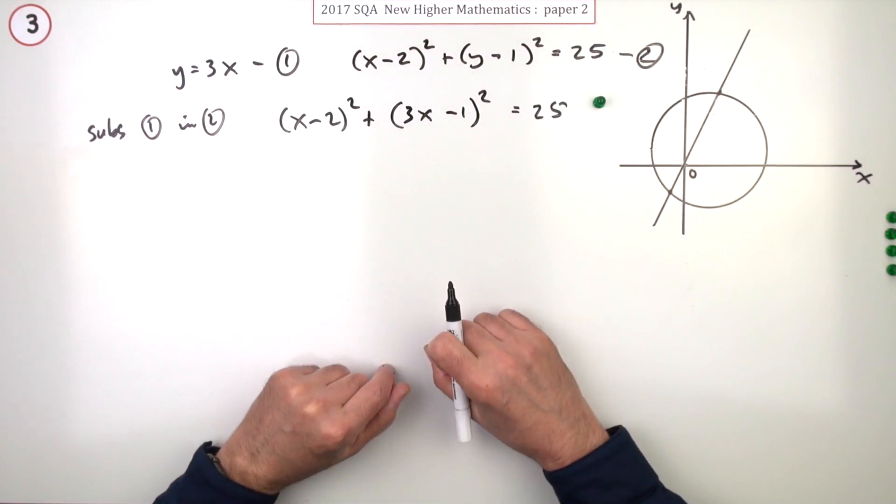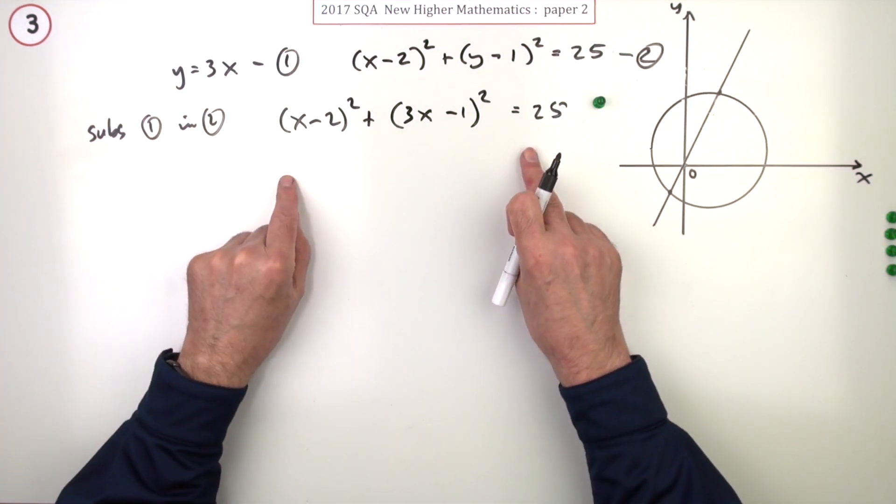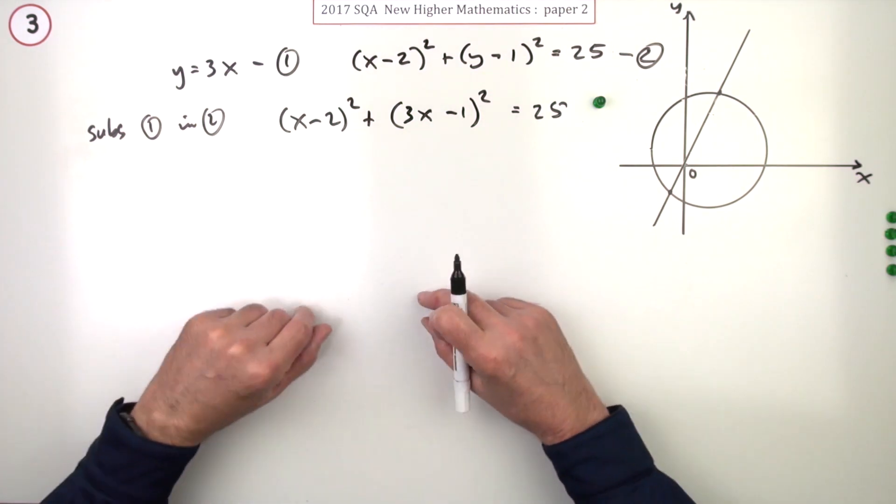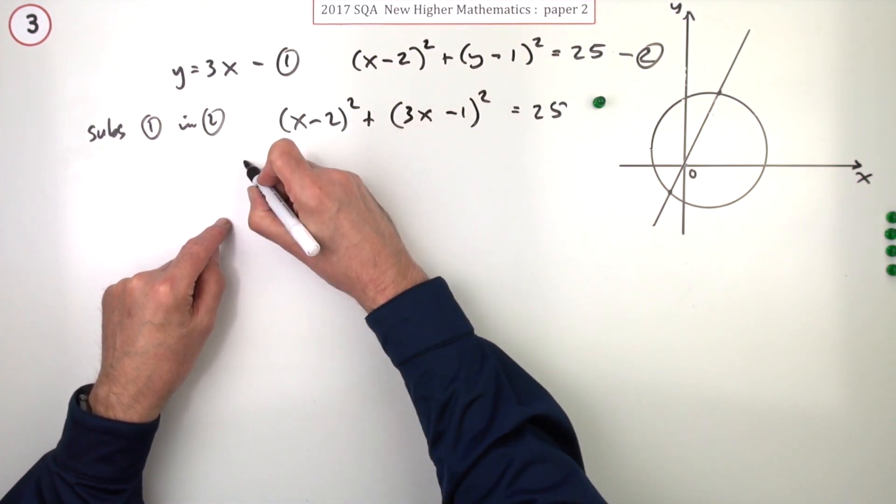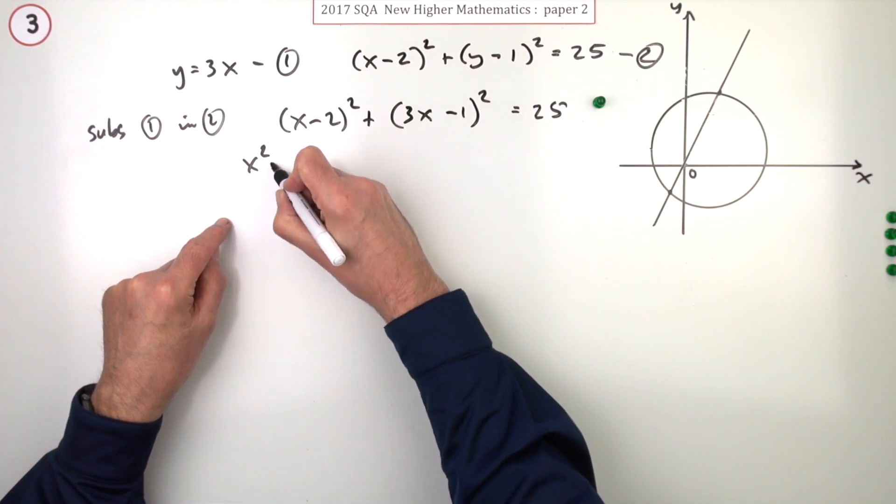The next mark won't come until you've got it all tidied up. So here we go - square the first and you get twice the product, that'll be minus 4x, square the last.